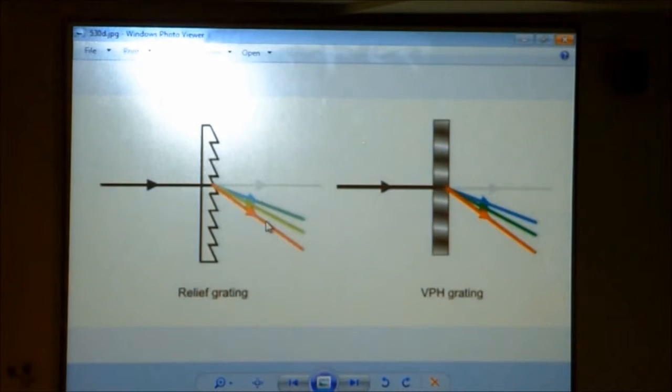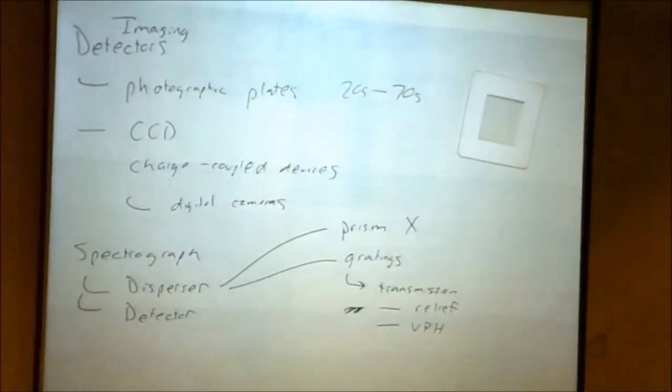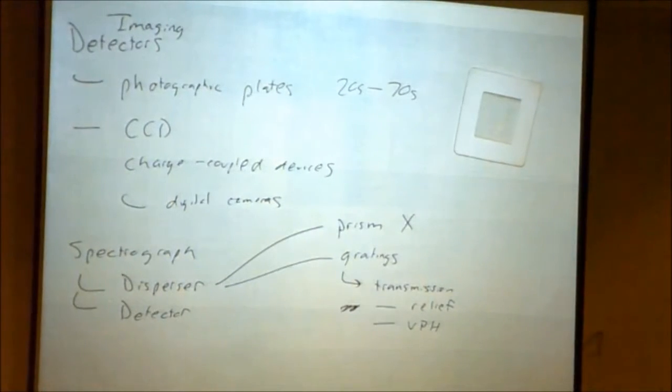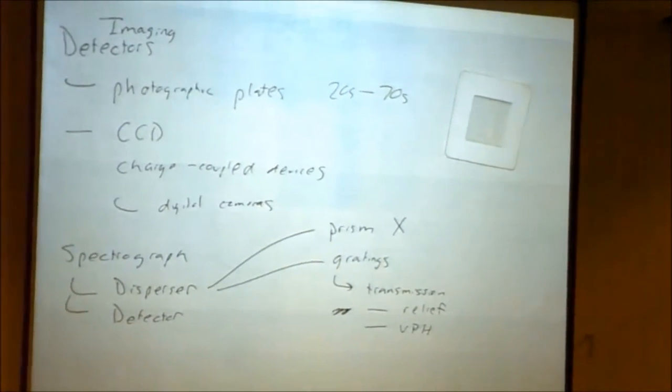But there are other ways to do it. You can do a VPH grating. So you have transmission. In terms of transmission gratings, you have relief and you have VPH. Technically, that stands for volume phase holographic. It's a new technology. Very, very efficient. It's the most efficient way that you can make a grating.